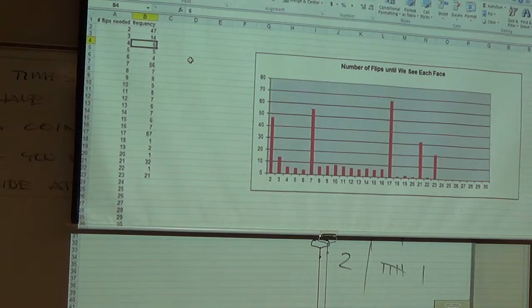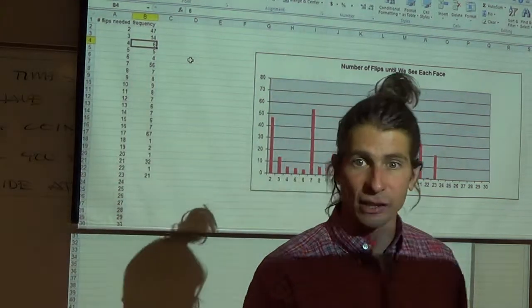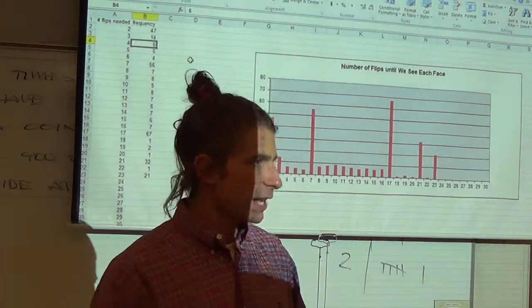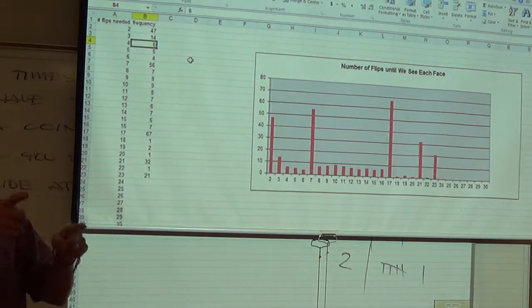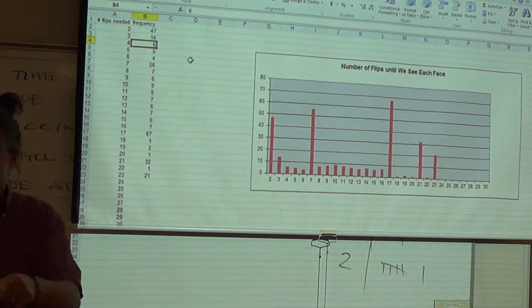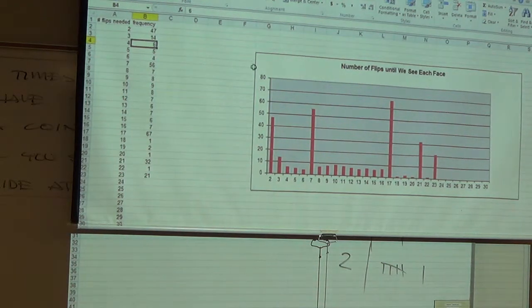All right, how many took 4, it took 4, it took 4 flips until we saw everything, so heads, tails, tails, heads, or tails, heads, heads, tails, I guess it's the only possibilities. 1, 2, 3, 4, 5, 6, 7, 8, beautiful, 8 there.